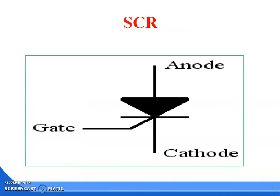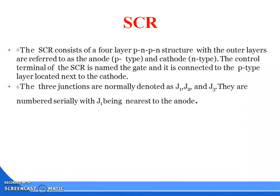This is the symbol of the SCR. The SCR has three terminals marked here: upper terminal is anode, lower terminal is cathode, and the middle terminal is gate.